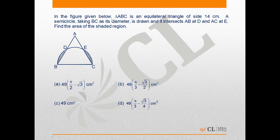This is a question where triangle ABC is an equilateral triangle of side 14 cm. A semicircle taking BC as its diameter, so this is 7, this is 7, is drawn and intersects AB at D and AC at E. Find the area of the shaded region.